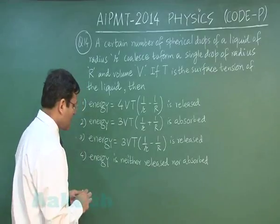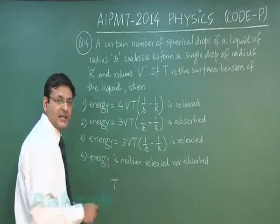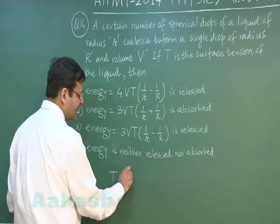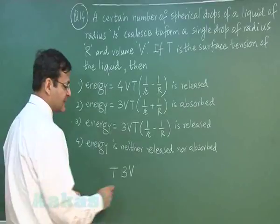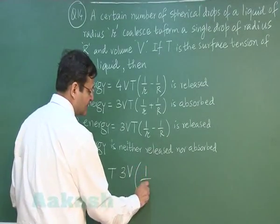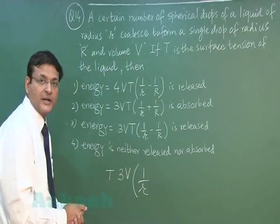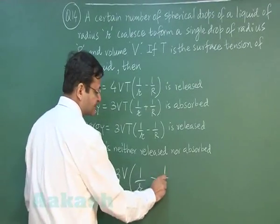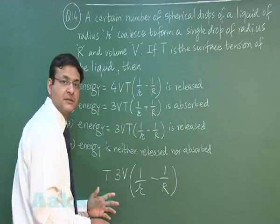The obvious idea is that energy means surface tension multiplied by change in surface area. Now you see surface tension is T that has been given to you and the area is what, area is basically 3 times this volume upon radius. So initial area this will be 3 v upon small radius and final area is 3 v upon capital radius, understand.